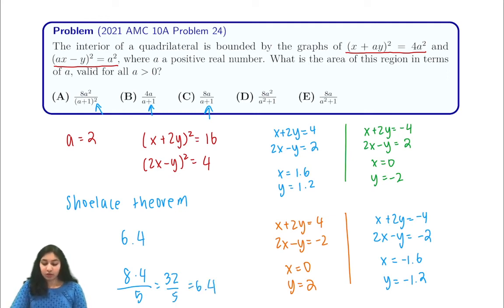We can double check E just to be sure. In E, we have 8 times 2, which is 16 over 2² + 1, which is 5. This is 3.2. So our only answer is D.